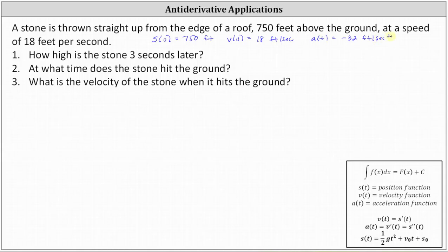To answer number one, we need to determine the position function s of t. To do this, we will first integrate the acceleration function. Because the acceleration function equals the derivative of the velocity function, integrating the acceleration function recovers the velocity function. Then, because the velocity function equals the derivative of the position function, integrating the velocity function recovers the position function. We say v of t equals the integral of a of t dt, which in our case is the integral of negative 32 dt, which equals negative 32t plus C.